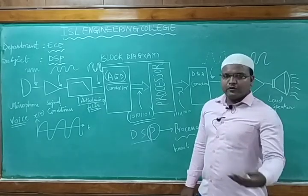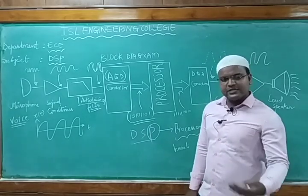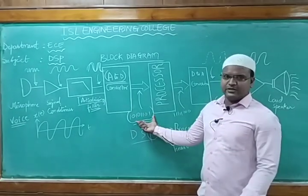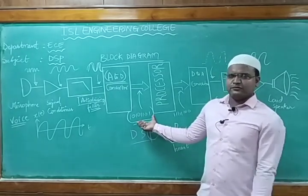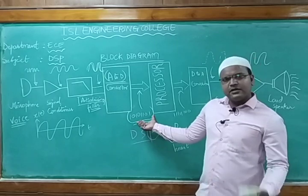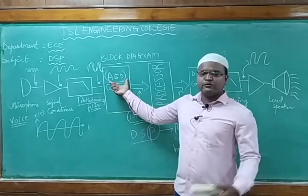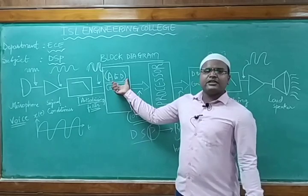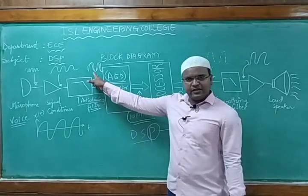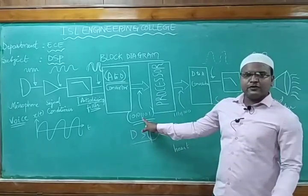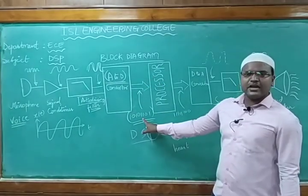Like in microprocessors such as the 8086, whatever inputs we give are based upon assembly language code — that is nothing but a combination of binary code. That means hexadecimal code, octal code — we have different types. That conversion is done using analog-to-digital converters. The basic thing to keep in mind is that whatever the signal — which is analog in nature — we are trying to convert it into digital, because we are passing it to a processor. The processor can understand the digital signal; it cannot understand the analog form.